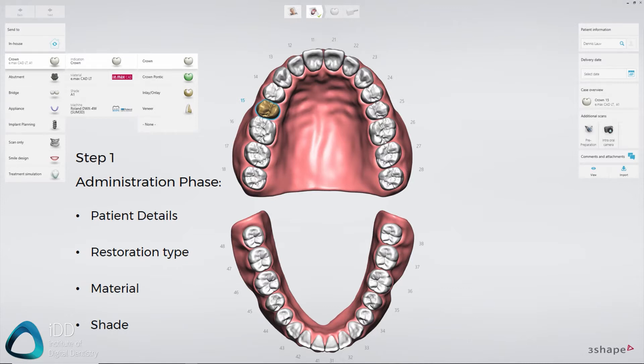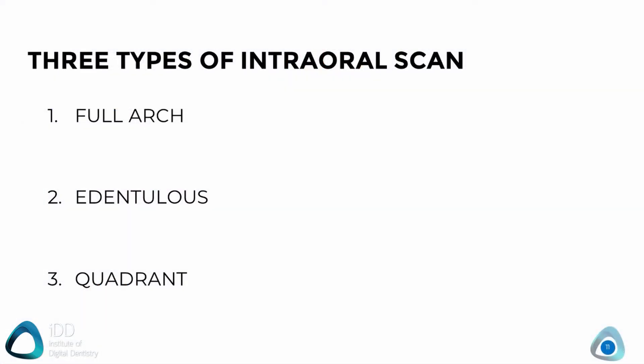There are basically three different types of scan you will carry out: full arch, edentulous, and quadrant scanning. Let's go over the scanning protocol for each one of these.